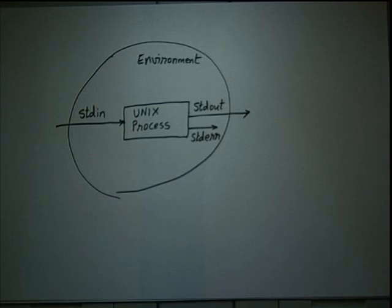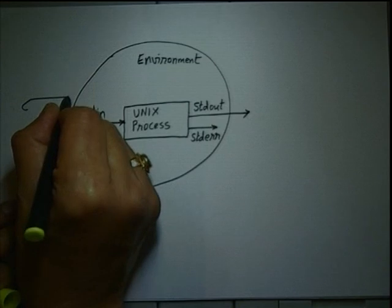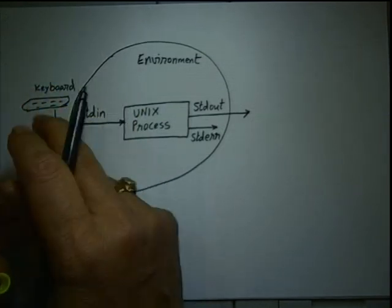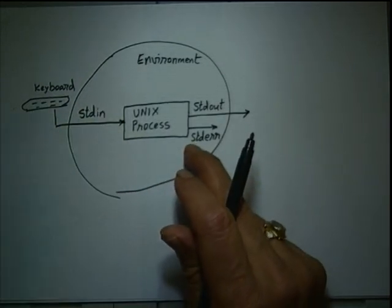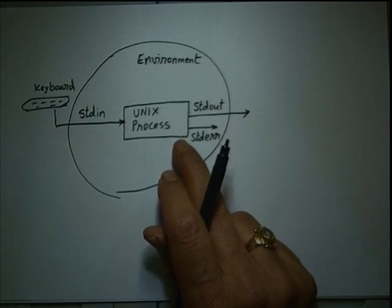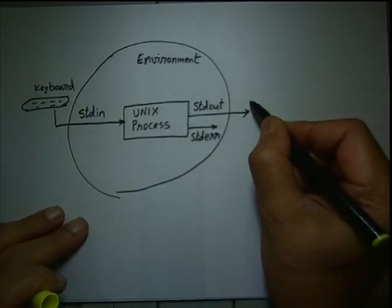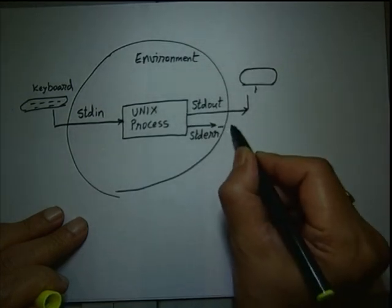By default, STDIN is connected to your keyboard. Whatever you type on the keyboard after the process starts, that stream of bytes goes into your process. So if you are executing a C++ program and you say cin >> A >> B, it will expect input from STDIN, which is the keyboard. Similarly, any cout statement or printf in your C program goes to STDOUT, which is connected to your monitor. By default, STDERR is also connected to your monitor.